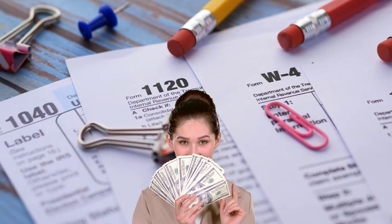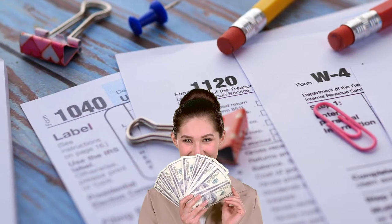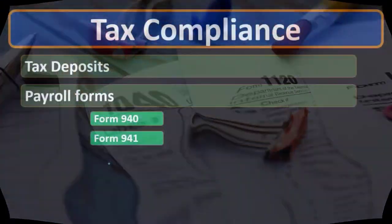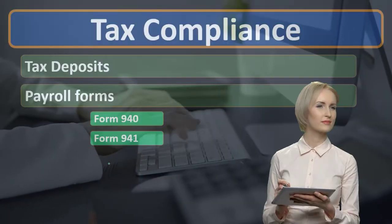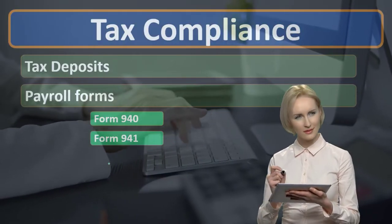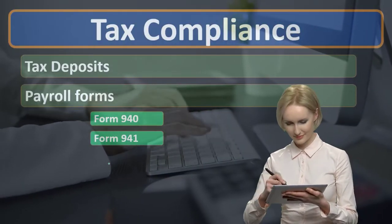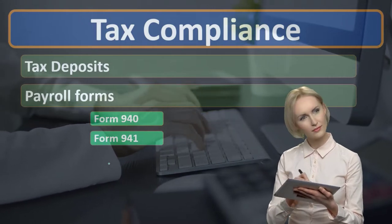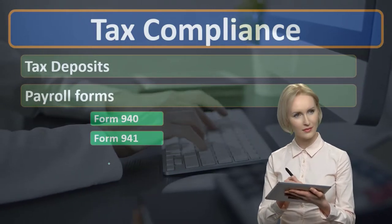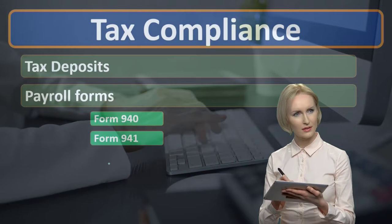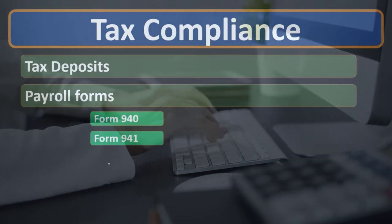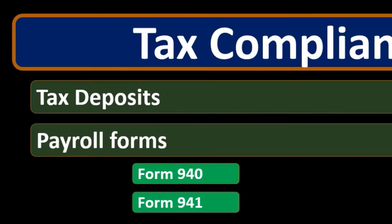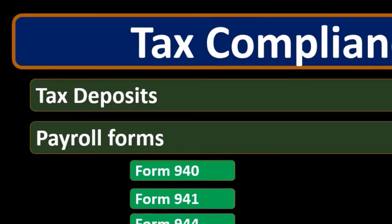The payroll tax employees are paying will be reported on their Form 1040. Other federal taxes include Social Security and Medicare — those are both employer and employee taxes, with both parties paying them. The 940 deals with the FUTA tax, the federal unemployment tax.